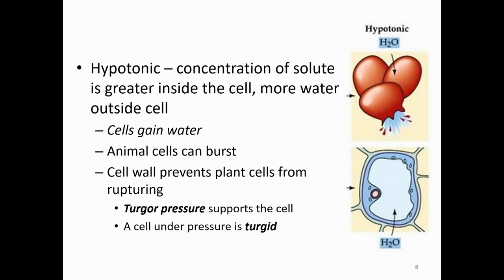Next is hypotonic. In a hypotonic solution, the concentration of solute is greater inside the cell, which means there's a higher concentration of water outside the cell. Because of that, water is going to move inside the cell. In an animal cell, the cell could potentially burst. In a plant cell, the cell wall keeps it from rupturing — that's called turgor pressure — and it actually supports the plant and makes it stand upright. When a plant wilts, it loses that water, but the cell wall still provides some shape.